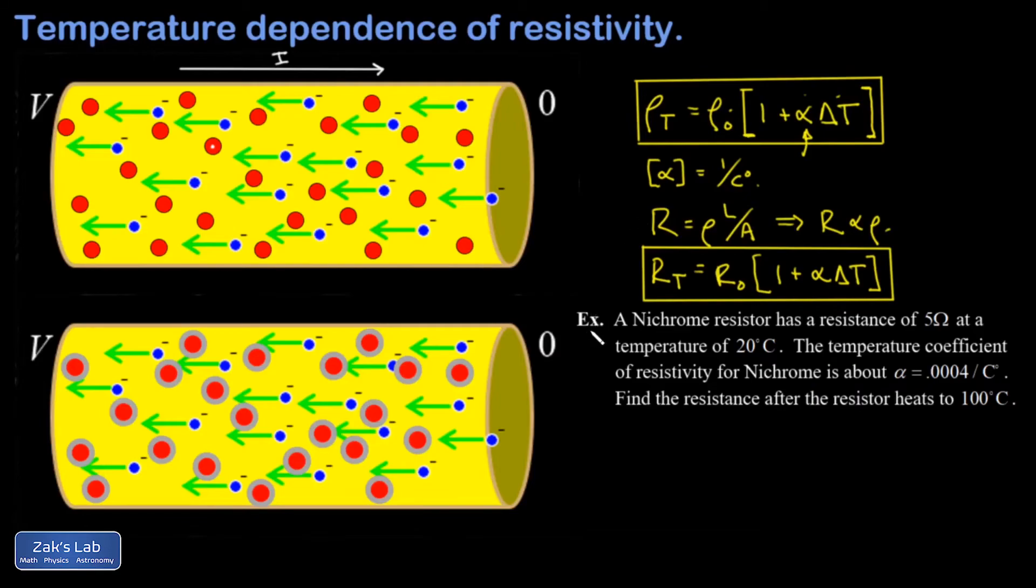Let's wrap things up with a simple example of how to apply this formula. We're told that a nichrome resistor has a resistance of 5 ohms at a temperature of 20 degrees Celsius. We know the temperature coefficient of resistivity for nichrome is about 0.0004 per degree Celsius. The chart that I used to find this said that alpha is equal to 0.0004 per degree Celsius at 20 degrees Celsius. So it's important you pay attention to what the reference temperature is when you do these calculations.